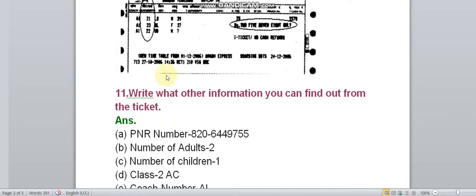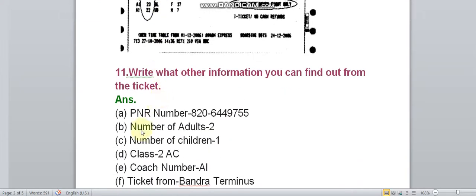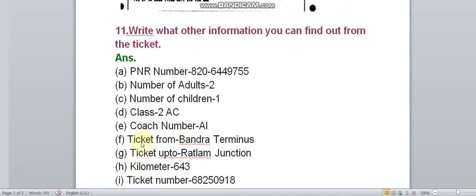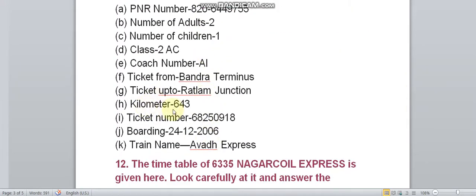Write what other information you can find out from the ticket. You can find out more information from this ticket like PNR number, number of adults 2 adults and number of children 1, Class 2AC, Coach number A1, Ticket from Bandra Terminus, Ticket up to Ratlam Junction. You can see it here Bandra Terminus and Ratlam Junction. Kilometer 643, Ticket number, Boarding on 24th December 2006, Train name Awadh Express.